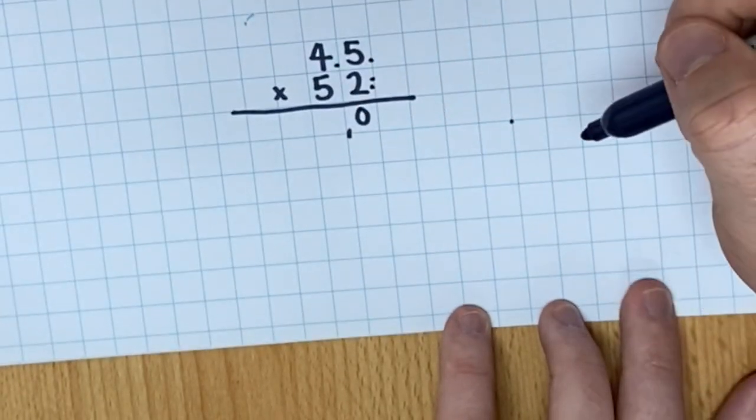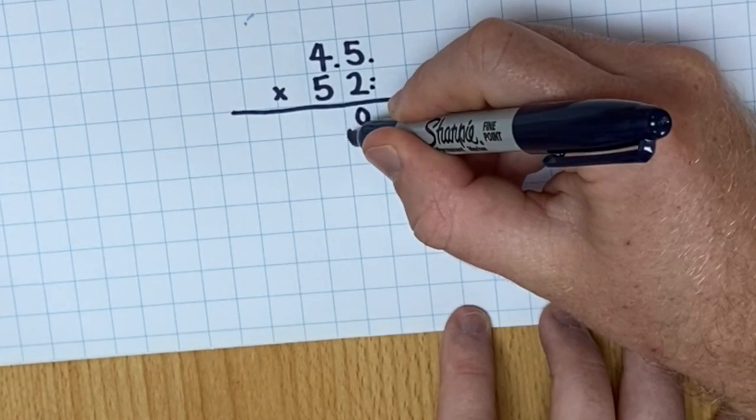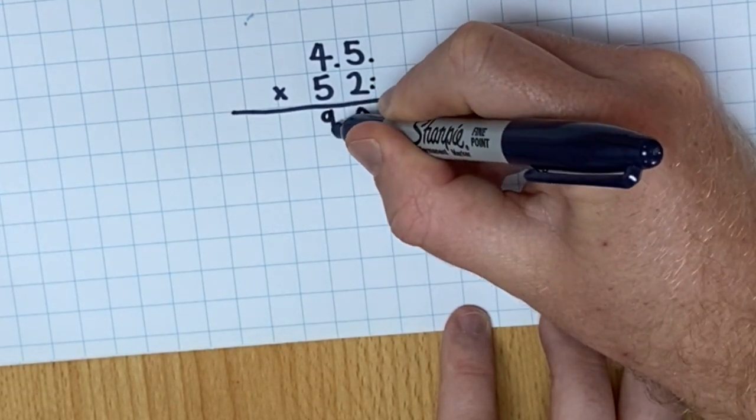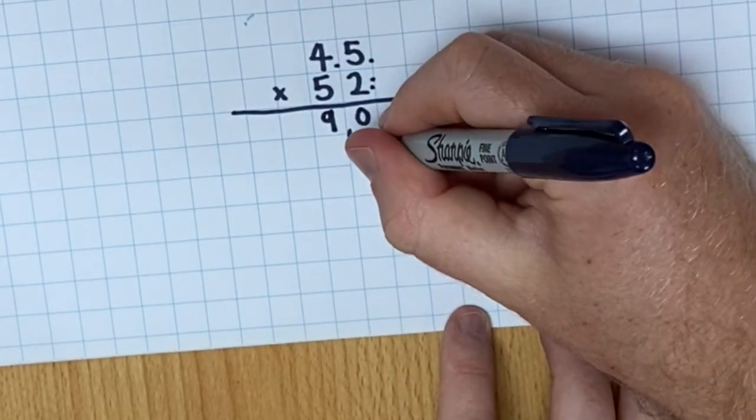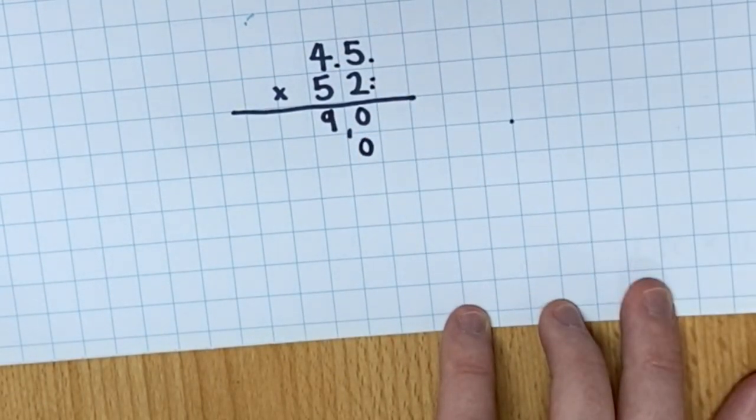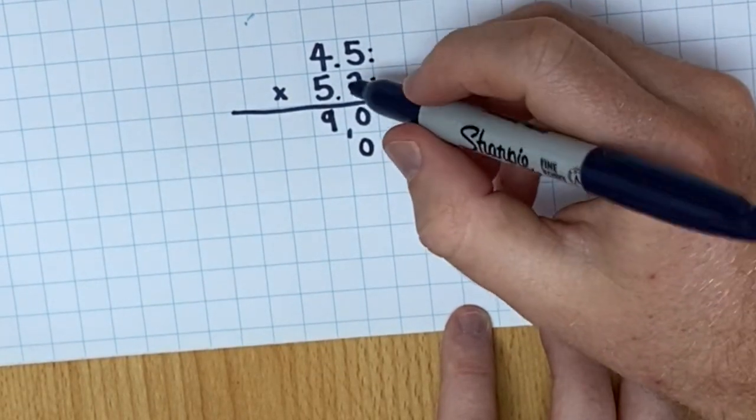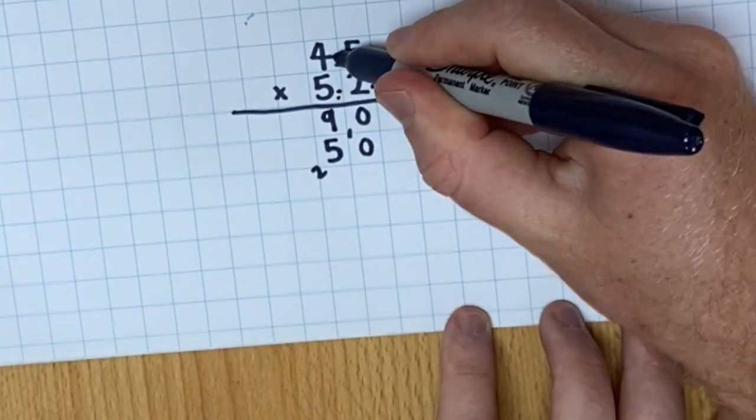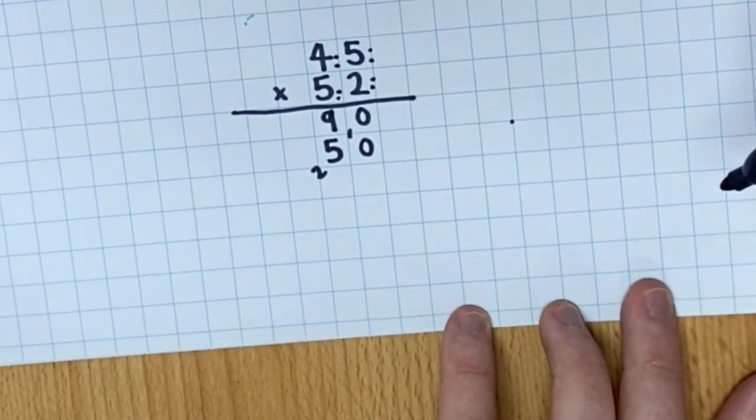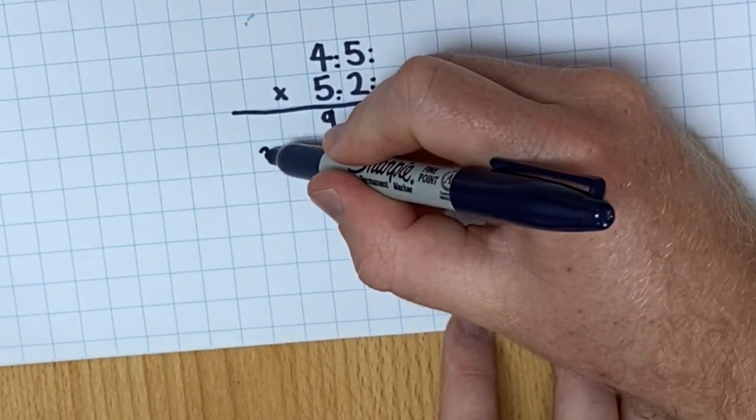2 times 4 is 8. And the 1 to carry, I need to add that to 8. So it's 9. Now on this line, I'm going to start by putting a 0 there. 5 times 5 is 25. And 5 times 4 is 20. But don't forget the 2. So that's 22.